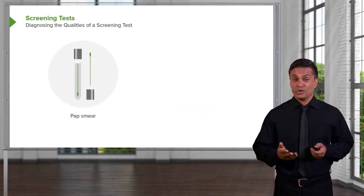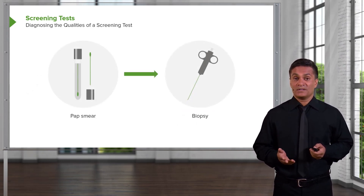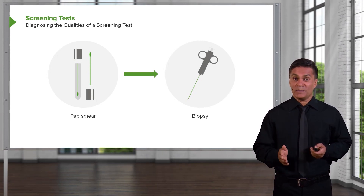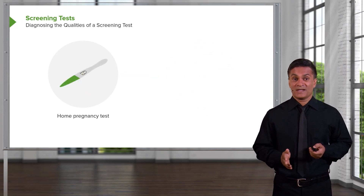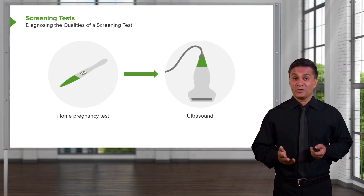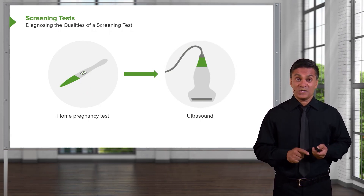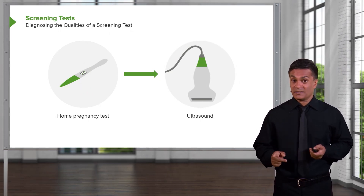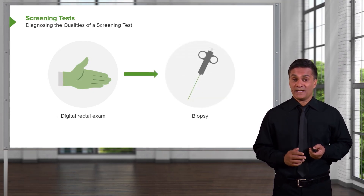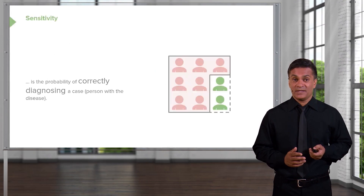A pap smear is usually followed up with a biopsy — if you test positive on a pap smear, there'll be a deeper investigation to determine if that positive test was real. If you test positive on a home pregnancy test, you'll probably get an ultrasound to confirm that suspicion, but if you test negative, you probably won't. Similarly, if you get a digital rectal exam and test positive on the DRE, you'll probably get a biopsy as well.